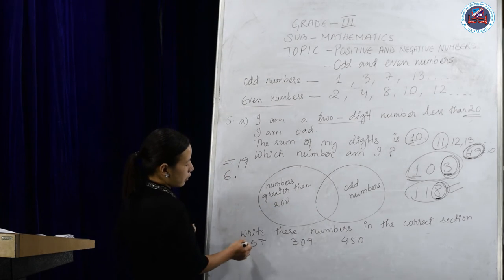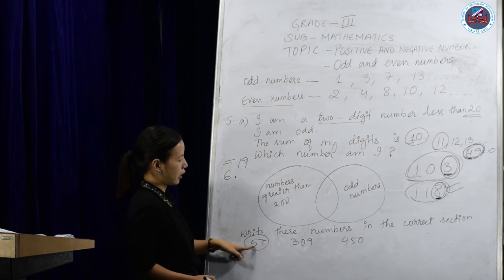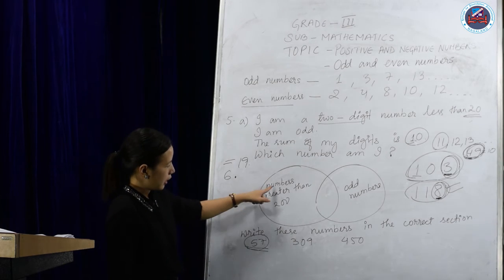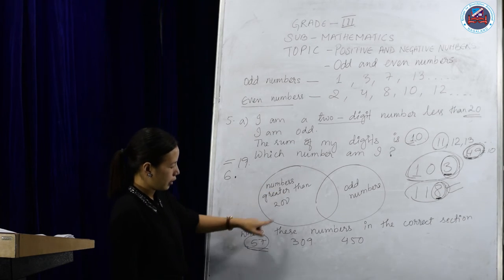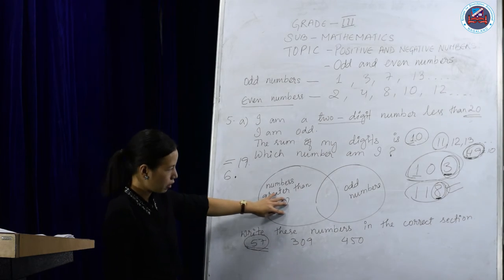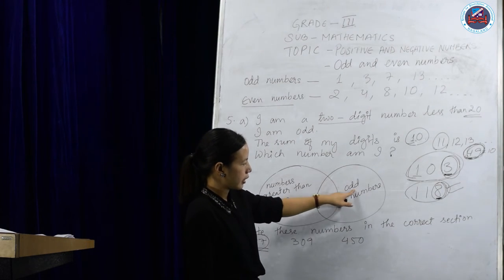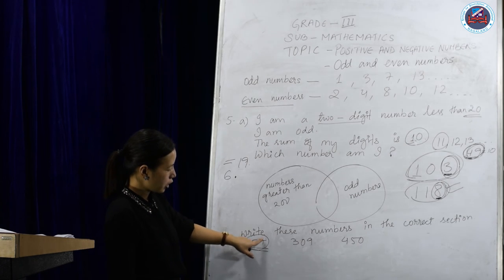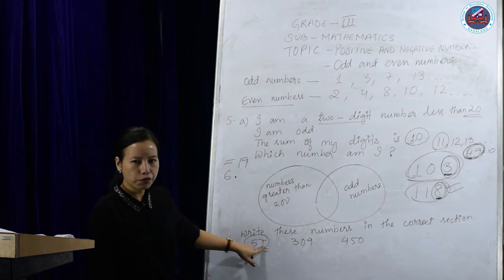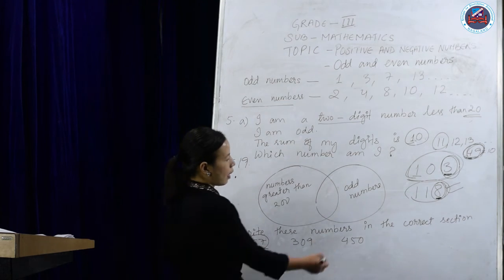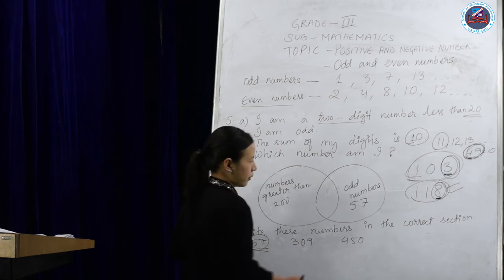The first number given is 57. Now 57 is not greater than 200, so we cannot write it in that circle. But looking at the other circle for odd numbers — the ones-digit is 7, and 7 is not in the two-times table — so 57 is an odd number. Therefore we write 57 in the odd-numbers part of the circle.